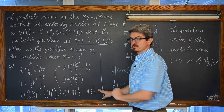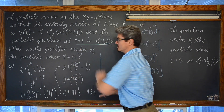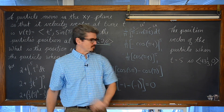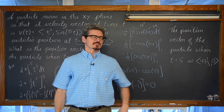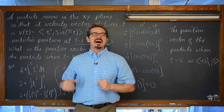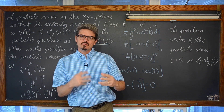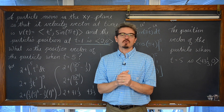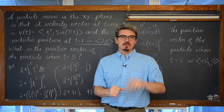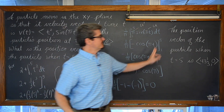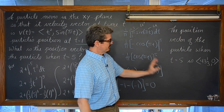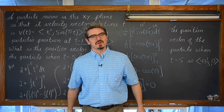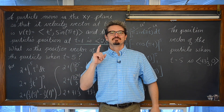So our position vector for the particle at t = 5 is ⟨43⅓, 0⟩. We know the horizontal position is 43⅓ and the vertical position is 0. I know the answer being 0 seems unrewarding, but make sure that if this is a free response question, you state your answer in context of the problem with the specific time period. The position vector of the particle when t = 5 is ⟨43⅓, 0⟩. I'm Mr. Tarrou. BAM! Go to your homework!